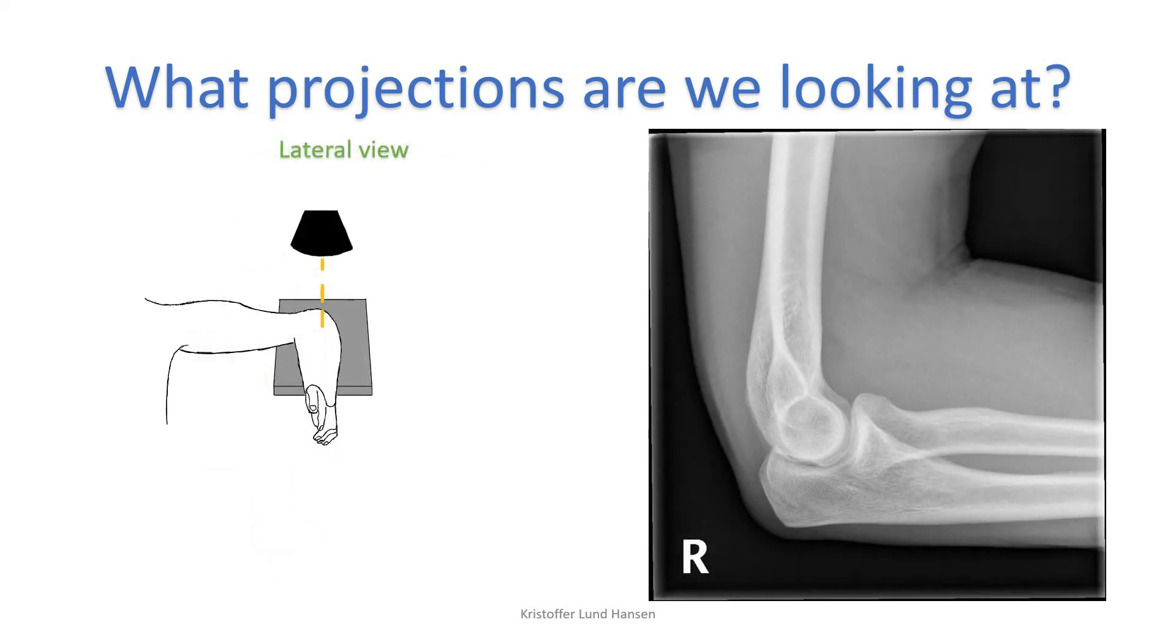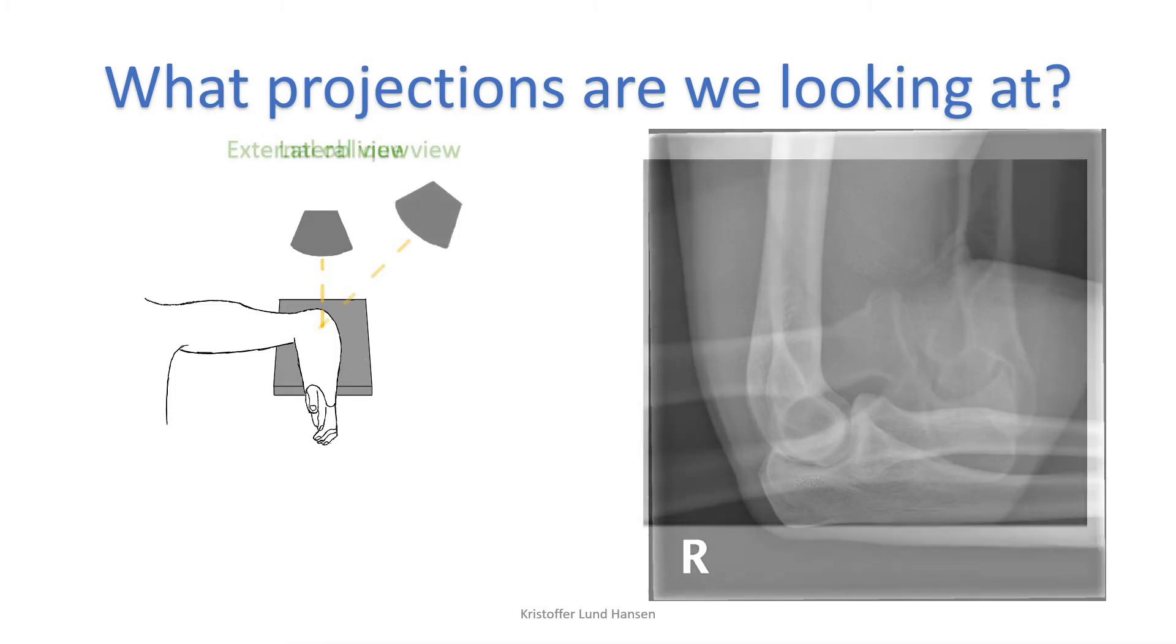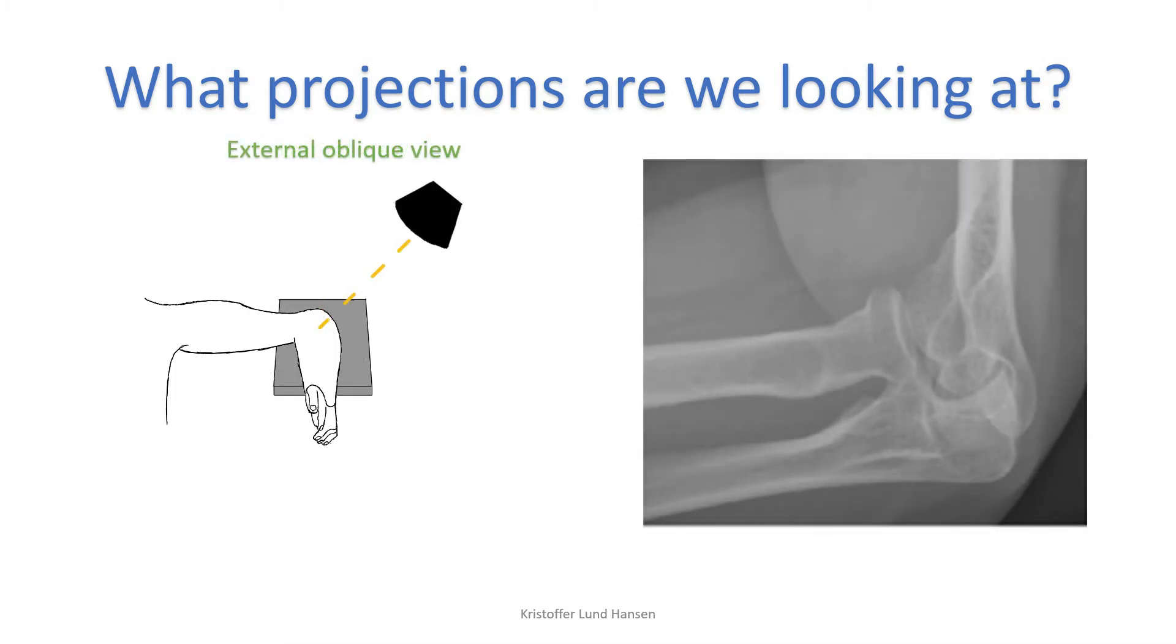Next, we have the lateral view. The arm is put in a position such as shown on the picture. This view is great for seeing any dislocations and for having another angle to view fractures from. Lastly, in some cases, we require an external oblique view. This one is better than the lateral one if we are specifically interested in looking at the radial head.